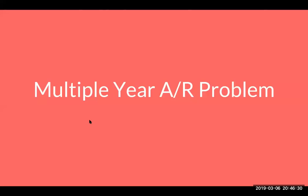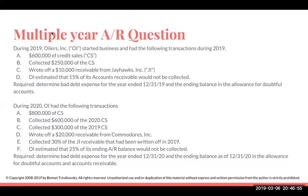What we're going to be doing right now is a multiple-year accounts receivable problem. I really like this way of doing it because oftentimes everything we've been doing before has only been focused on something happening within a year, instead of asking what happens in 2019 and what happens in 2020. The requirements are: we'll determine the amount of bad debt expense, the ending balances, and the allowance for doubtful accounts, as well as the ending accounts receivable balance.